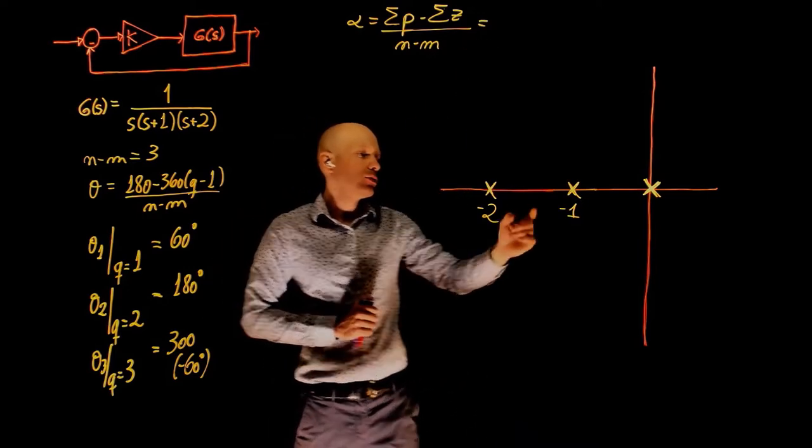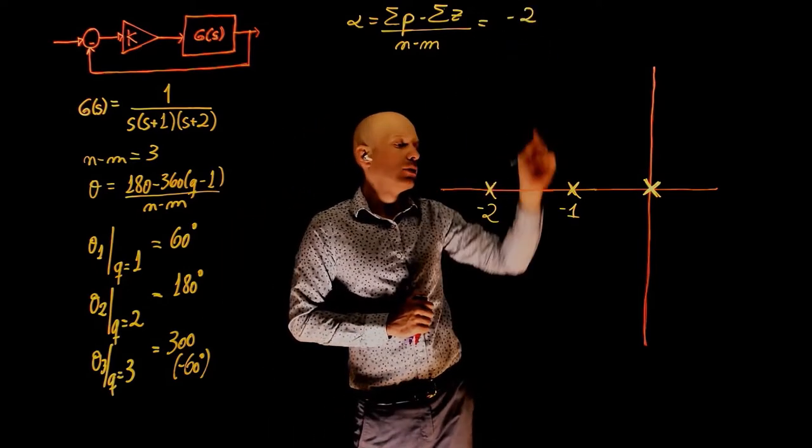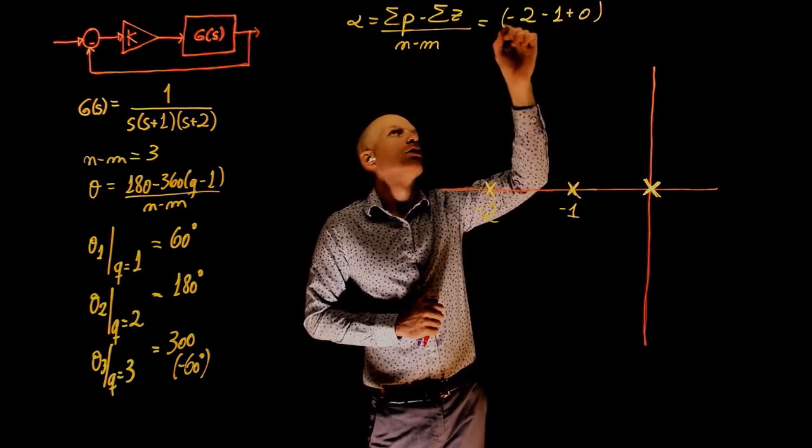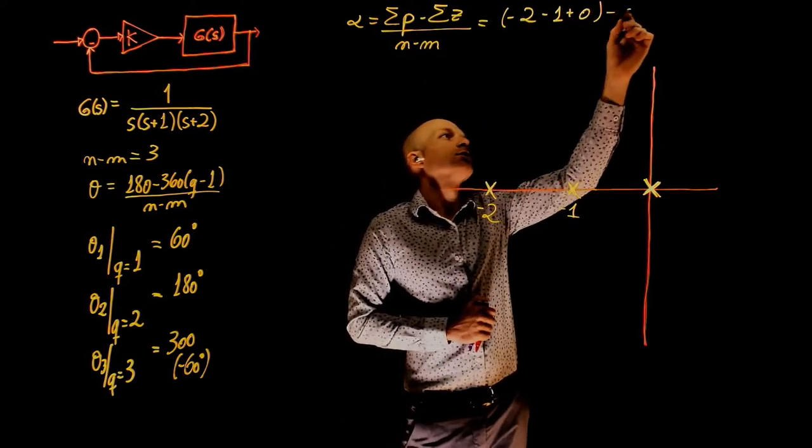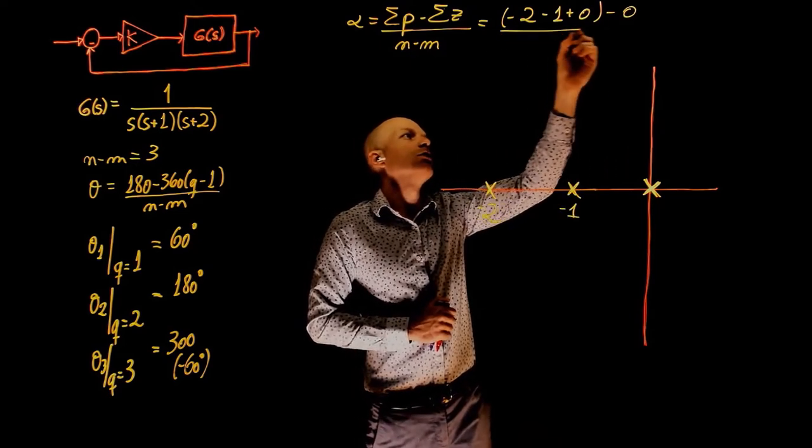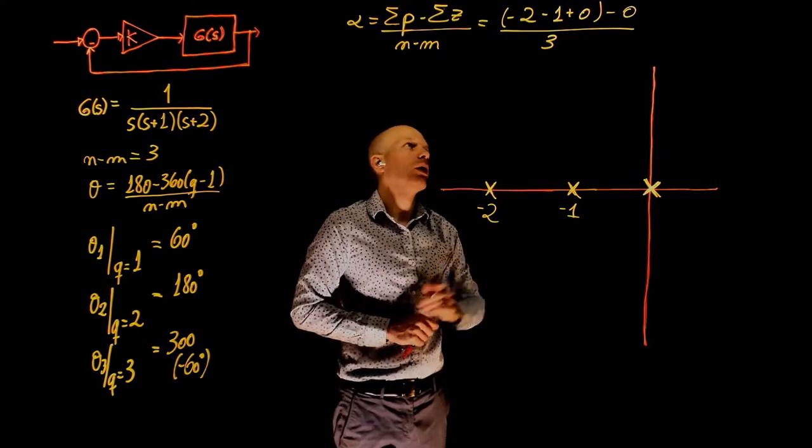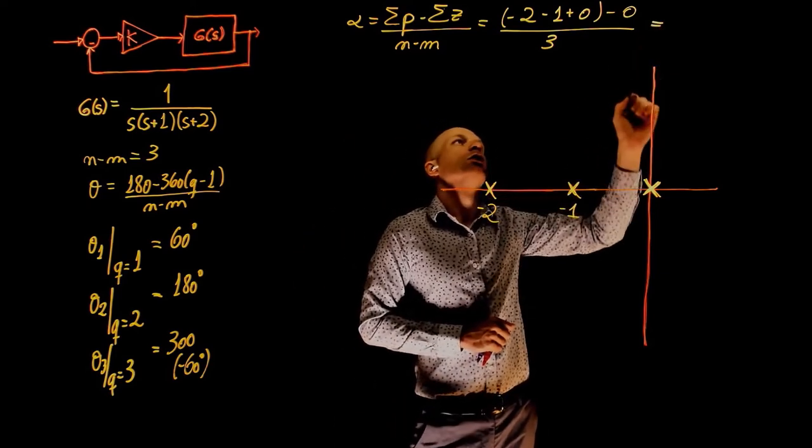The centroid of the asymptotes is obtained as the sum of poles minus the sum of zeros divided by n minus m. Sum of poles, we have negative 2, negative 1, plus 0. This is for sum of p minus the sum of zeros, that's 0, divided by 3. And this is equal to negative 1.